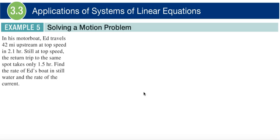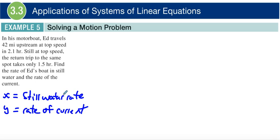So we want to find two things there. We want to find the still water rate and then the current. So we'll just go ahead and write those two things down. We'll let x equal the still water rate, so how fast is Ed traveling in still water. And then we want to know the rate of the current.